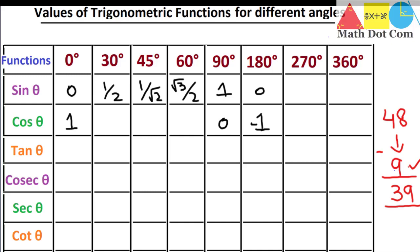Isn't it easy to memorize just 9 values out of 48? So let's see how we can derive the rest of the values from them. I'll write the derived values in red.